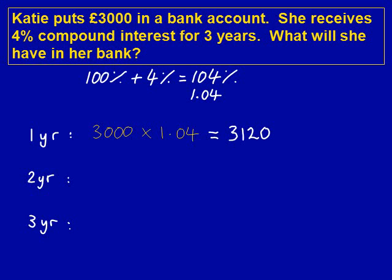We're now going to repeat this step for the second year. We start this time with £3,120, because that's how much we have in the bank account, times 1.04. We type this into a calculator to get the answer of £3,244.80. On a calculator it will just say 0.8, but because this is money we write 0.80, which is 80 pence.